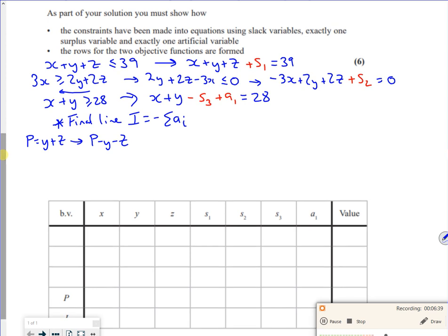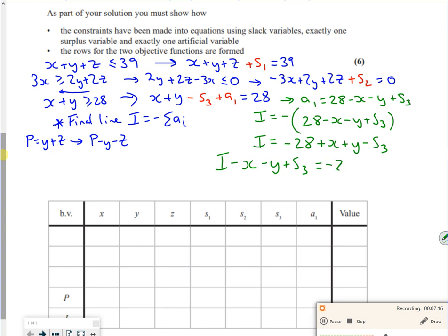That transforms as P minus Y minus Z. So let's sort out my I line. If I transform this as a1 is 28 minus X minus Z plus s3, that's the sum of a_i. So I is equal to minus 28 plus X plus Z minus s3. Then take everything over apart from the 28. So I minus X minus Z plus s3 is equal to minus 28.